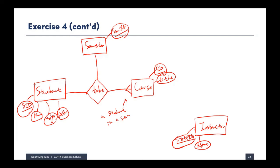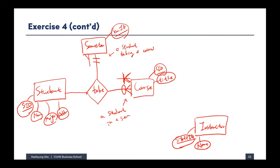The minimum could also be at least one depending on the university rule, but since it's not specified either is fine. From the perspective of a student taking a specific course, how many semesters can they take it? If the university doesn't allow retaking, it's one. If the university allows retaking the course for a better grade, it can be one to many. Either is acceptable.